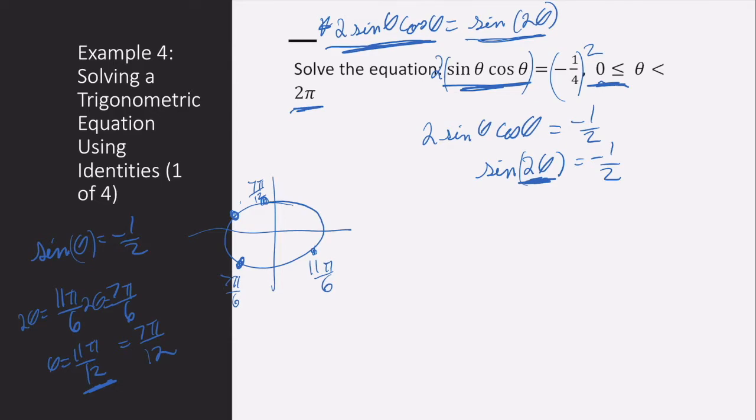So that means because I essentially cut the period in half, there will be four possible solutions. So let's write a general form.